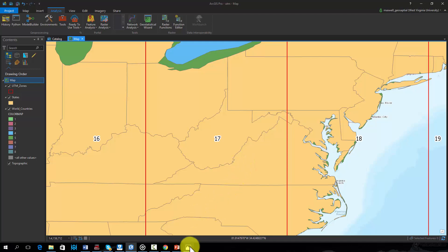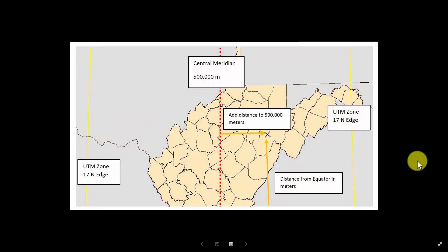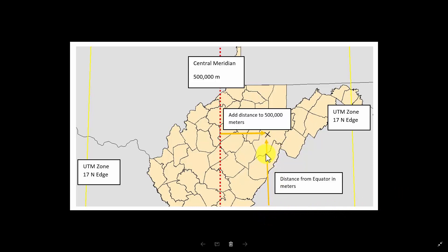Within a UTM zone, a coordinate is defined using easting and northing, as opposed to latitude and longitude. Similar to latitude, the northing measures position in the north-south direction. This measurement will be the distance from the equator in length units, such as meters.